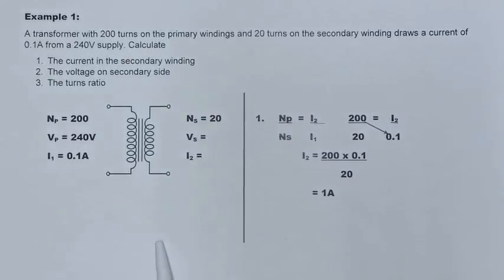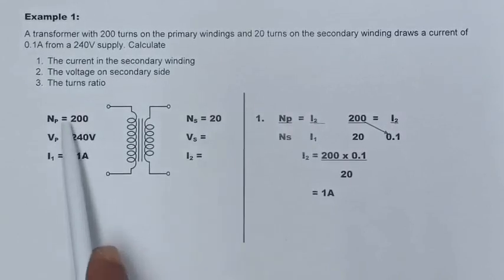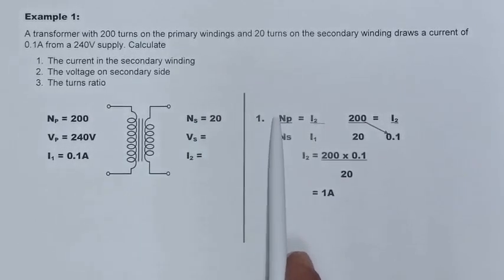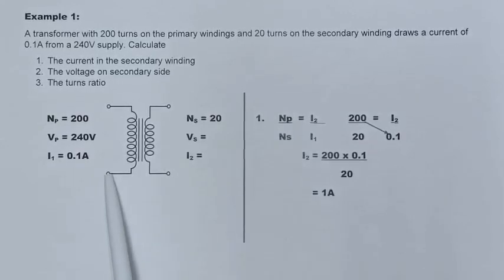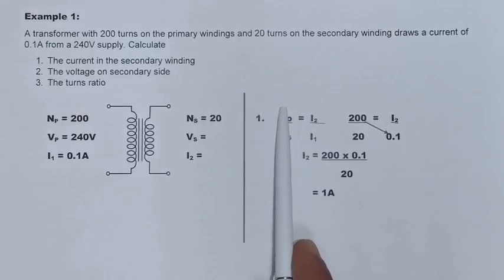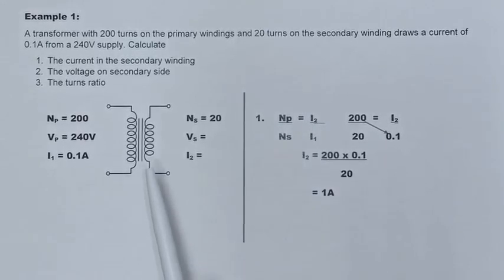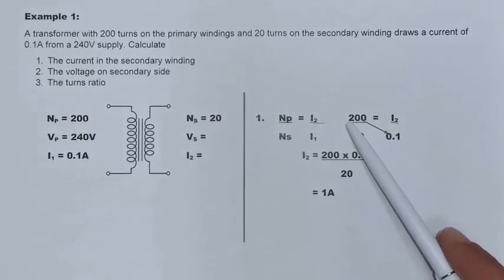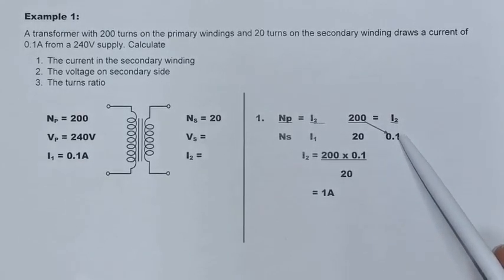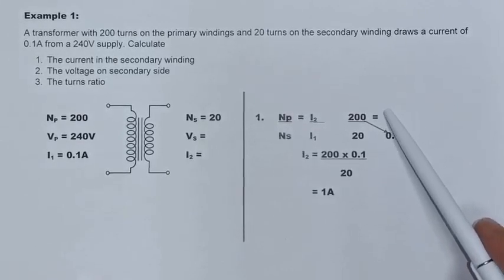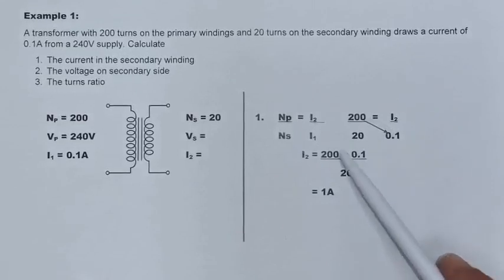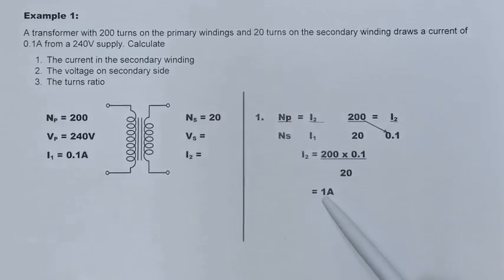To find the secondary current, we need to decide which ratios to use. Since we have primary and secondary turns, we use the turns ratio together with the current ratio. Plotting in the values: 200 over 20 equals I2 over 0.1. We make I2 the subject and cross-multiply the known values: 200 times 0.1 divided by 20 gives us 1 amp.